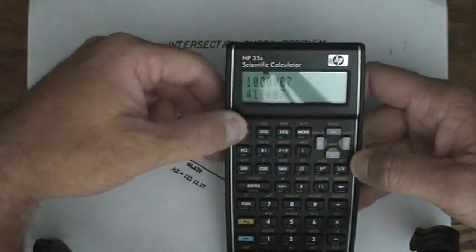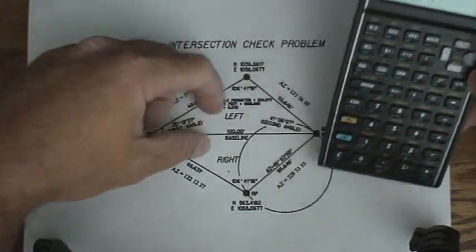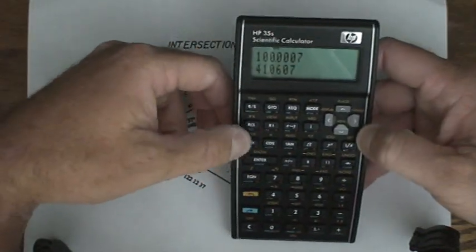Run stop, 100 feet, 41, 06, 07, run stop.